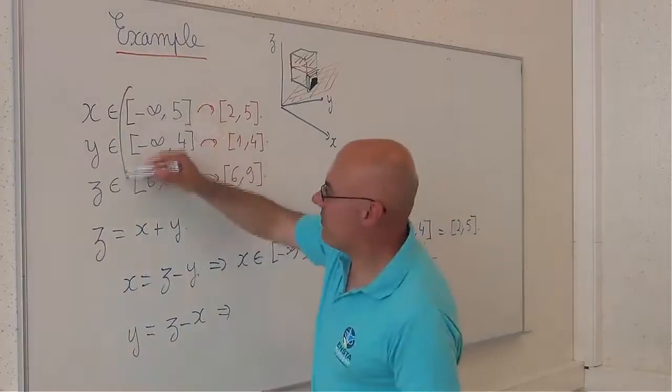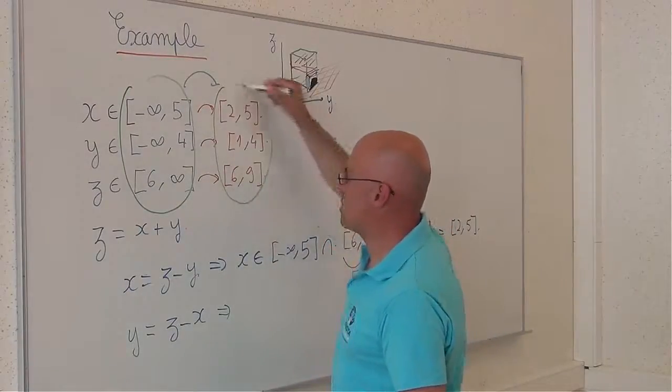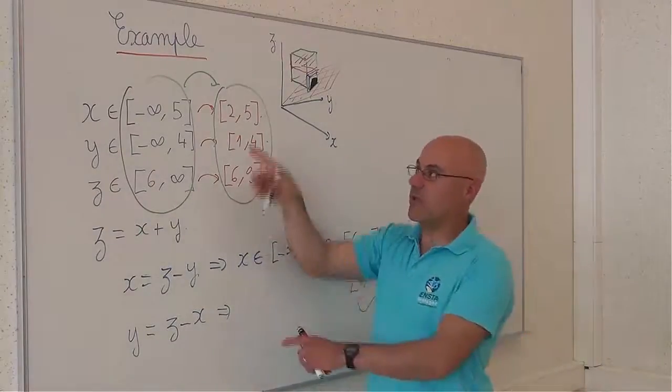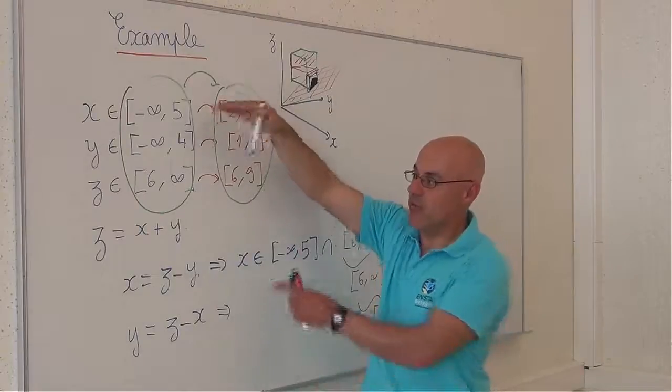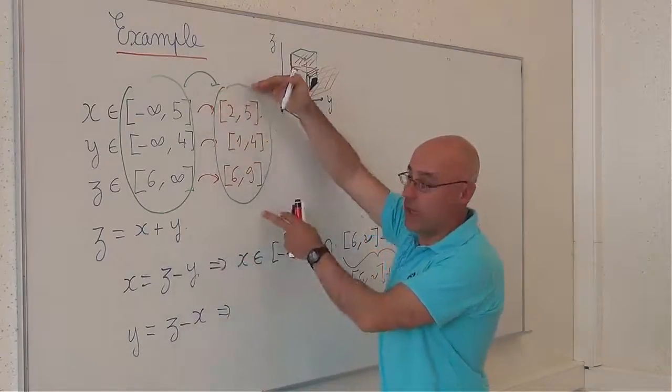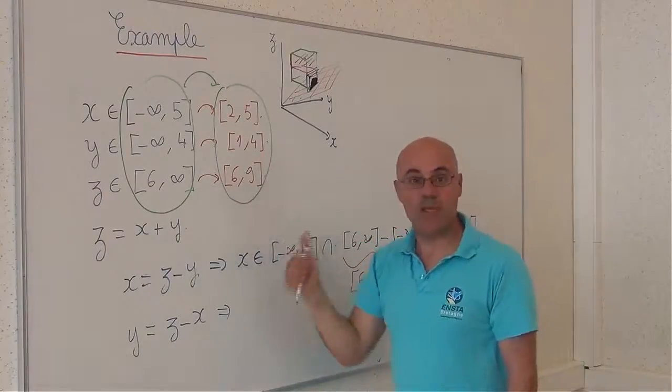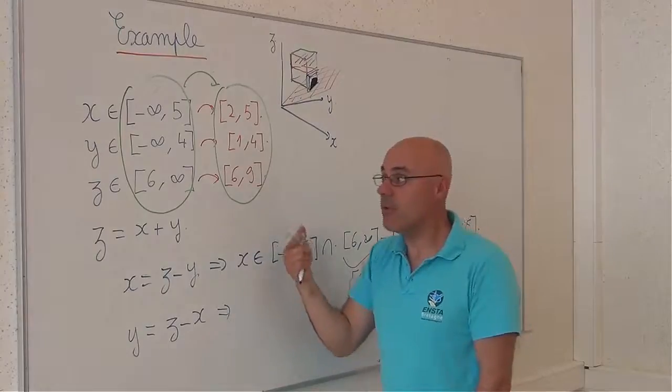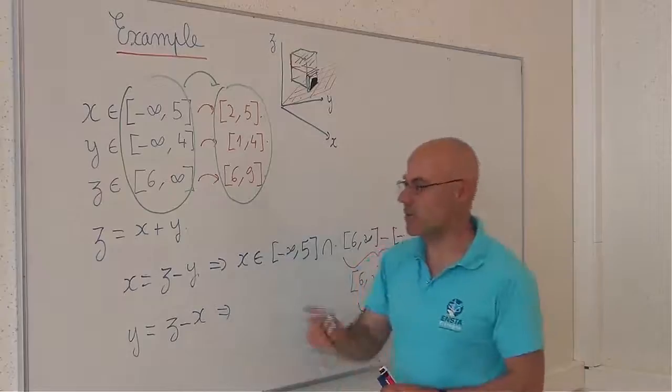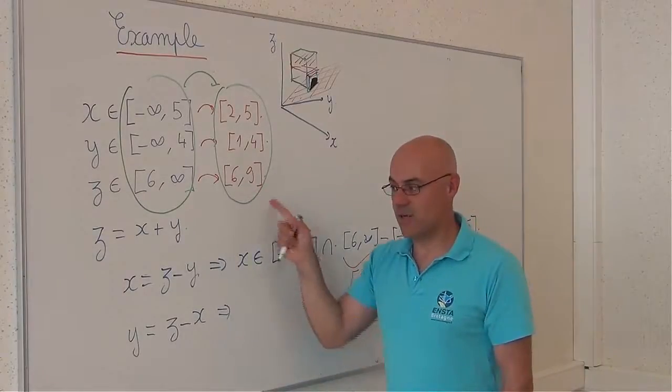Thus, from one box, I obtain the contracted box. I have thus used interval and interval computation, or interval arithmetic, to compute a contractor. This contractor in this situation will be idempotent and will be minimal also. Of course, if it is minimal, it is idempotent.